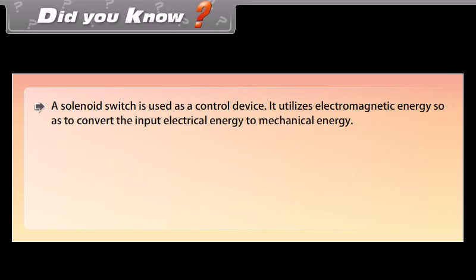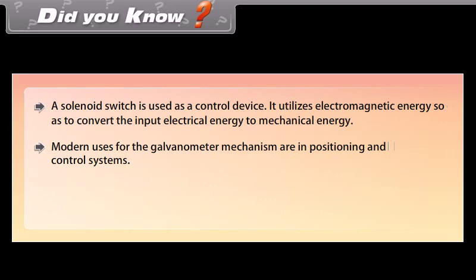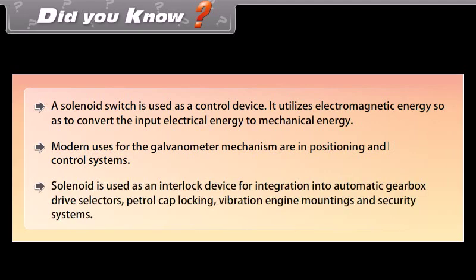Did you know? A solenoid switch is used as a control device, utilizing electromagnetic energy to convert electrical energy to mechanical energy. Modern uses for the galvanometer mechanism are in positioning and control systems. Solenoid is also used as an interlock device for integration into automatic gearbox drive selectors, petrol cap locking, vibration engine mountings, and security systems.